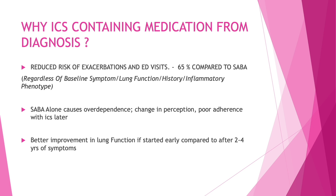Studies show that starting ICS early in a patient reduces the number of exacerbations and emergency visits by almost 65% compared to starting SABA. Regardless of the patient's baseline symptom level, eosinophilic or non-eosinophilic type, or lung function, it is preferable to start on an ICS-containing regimen. SABA causes over-dependence, a change in perception, poorer adherence, and patients may later be unwilling to start ICS. So it is preferred to start ICS right from diagnosis—it improves lung function and reduces future exacerbations.